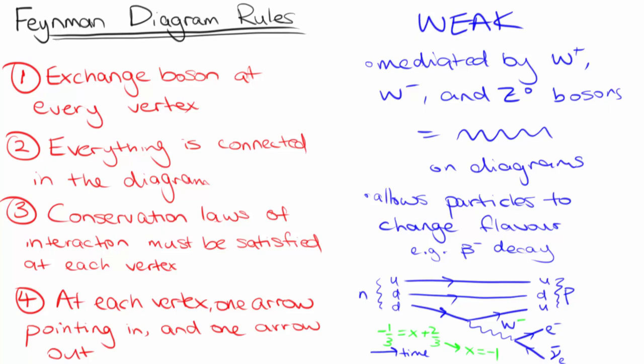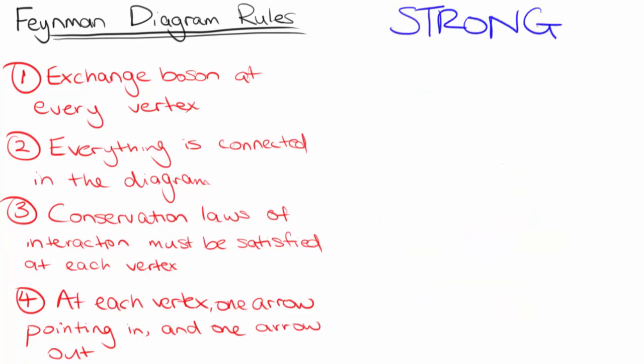Now let's look at the strong interaction. The strong force mediates the interaction between quarks, which have color charges. The exchange boson that does this is called the gluon, and is represented by a curly line in Feynman diagrams.